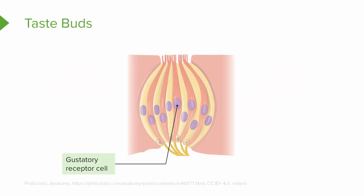In this image of the taste bud, notice the gustatory receptor cells, which contain gustatory taste hairs that protrude from the taste pore toward the oral cavity. This is what is going to come in contact with our taste buds.